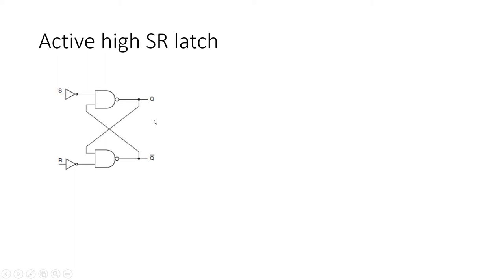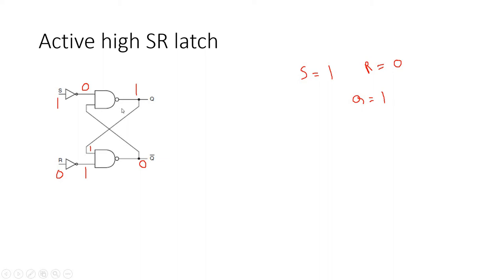This was our active low SR latch, and scientists modified it to make an active high SR latch by adding one inverter on the input side. First case: S=1 and R=0. After passing through the inverter, S=1 becomes 0 and R=0 becomes 1. For the upper NAND gate, since one input is 0, the output Q is surely going to be 1. This 1 feeds back to the second NAND gate, where both inputs are now 1, so Q̄ becomes 0.